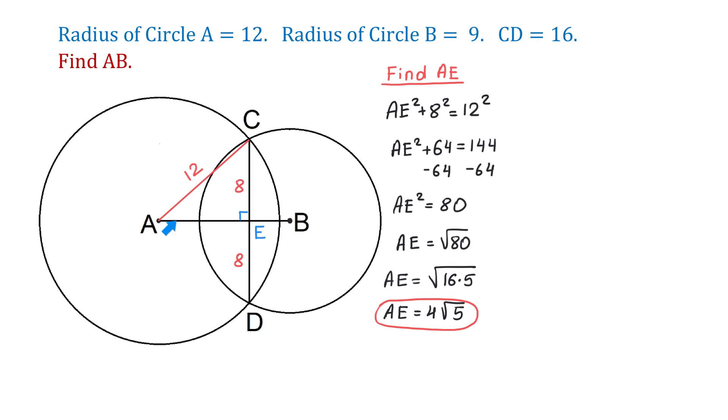So, we just found AE, and now let's find BE. For this, we will connect B and C, and we will have another right triangle formed, BEC. In this triangle, BC equals 9, because this is the radius, and CE equals 8. Then again, we can use the Pythagorean theorem to find BE.